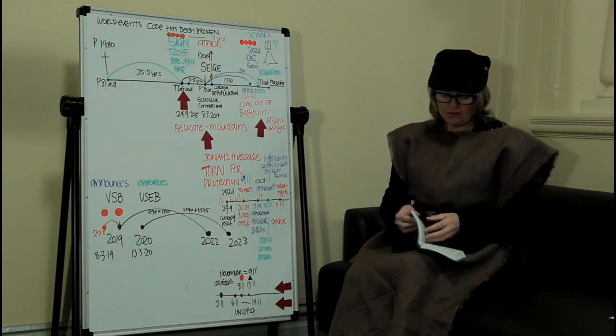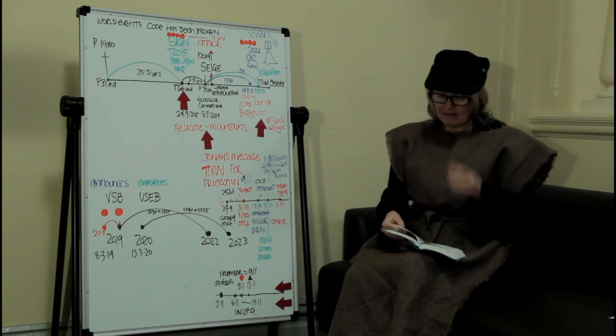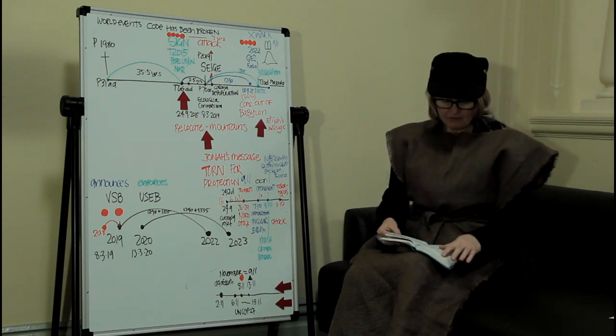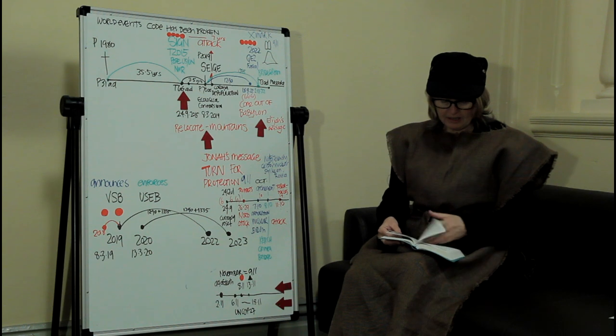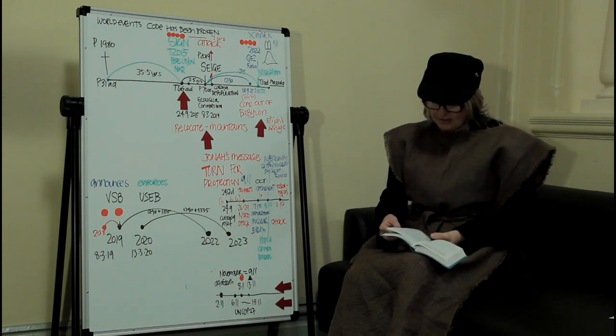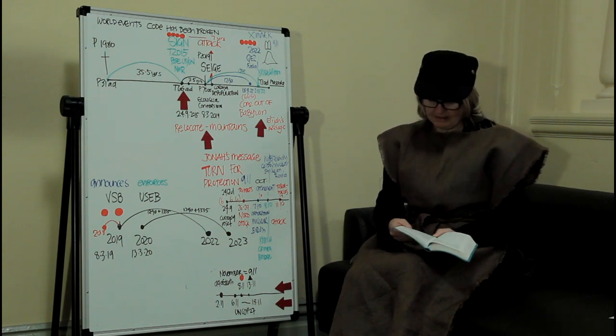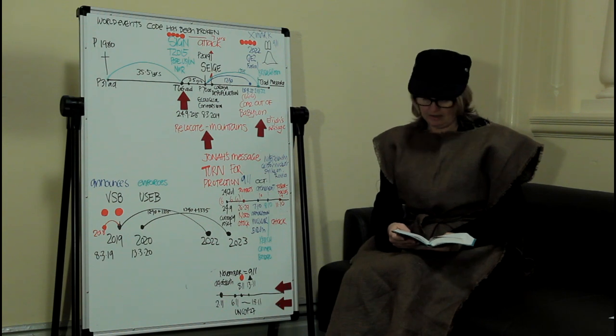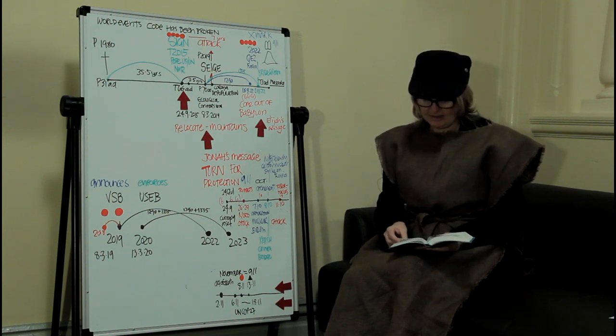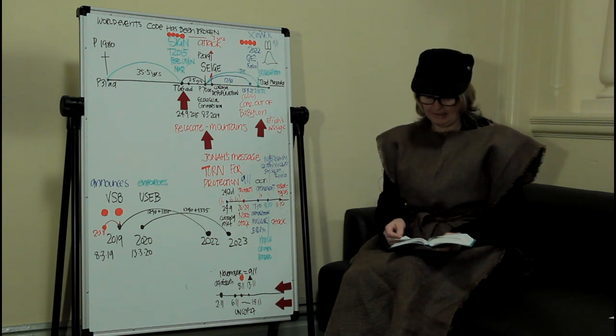So the book of Joel actually describes this. So I'm going to read the words because they really kind of grip your soul and you really kind of get the message. It says, blow the trumpet in Zion, sound an alarm in my holy mountain. Let everybody tremble for the day the Lord comes, it is near at hand. A day of darkness and gloominess, clouds and thick darkness. And it talks about this mighty army that comes down on the land.